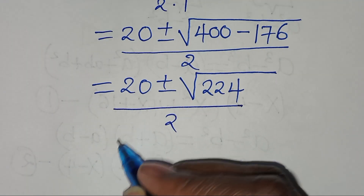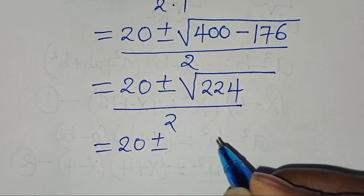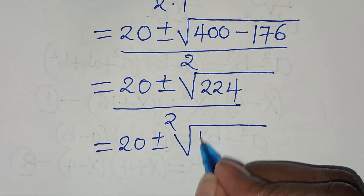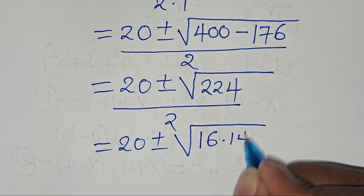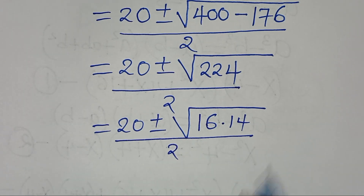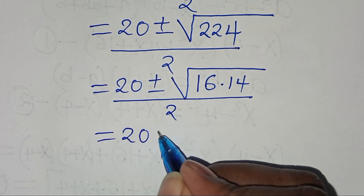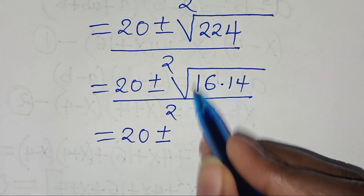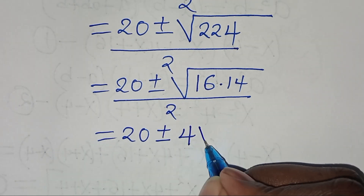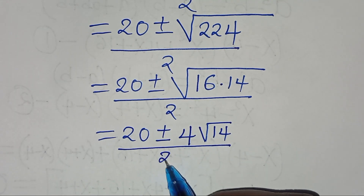So here we have 20 plus or minus the square root of 224, which is 16 times 14, everything divided by 2. So here we have 20 plus or minus the square root of 16 — which is 4 — then square root of 14, everything divided by 2.